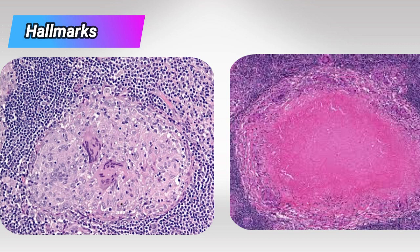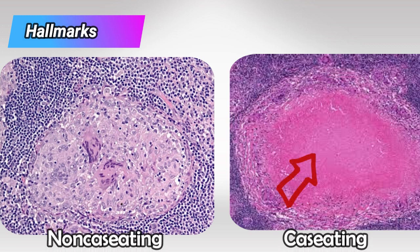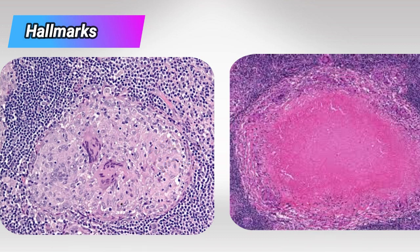As you can see on the right, we have central clearing — this is the caseation, which is dead cells. As you can see, it's a clear pink. On the left side we have the non-caseating granuloma; there are no dead cells in the center, and there are plenty of small blue dots which are live cell nuclei. So: caseating = dead cells; non-caseating = no dead cells.